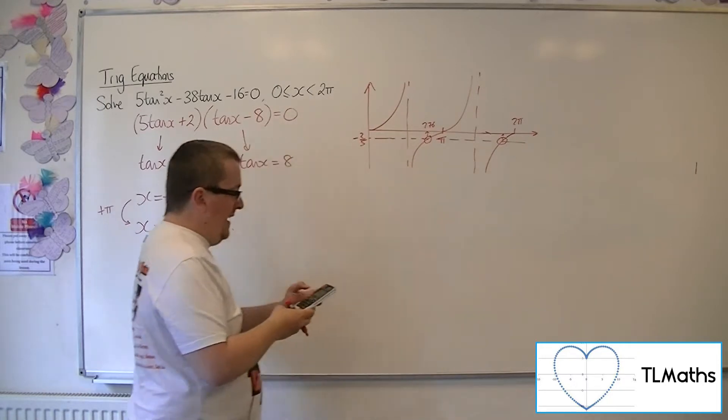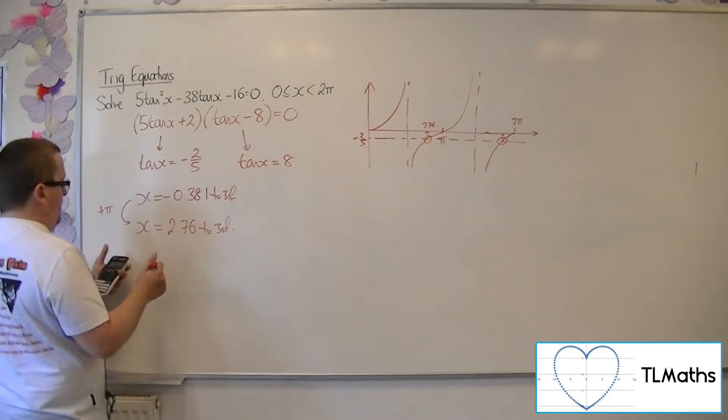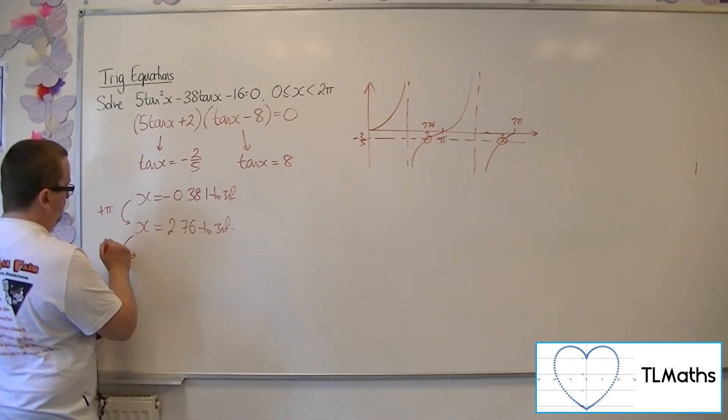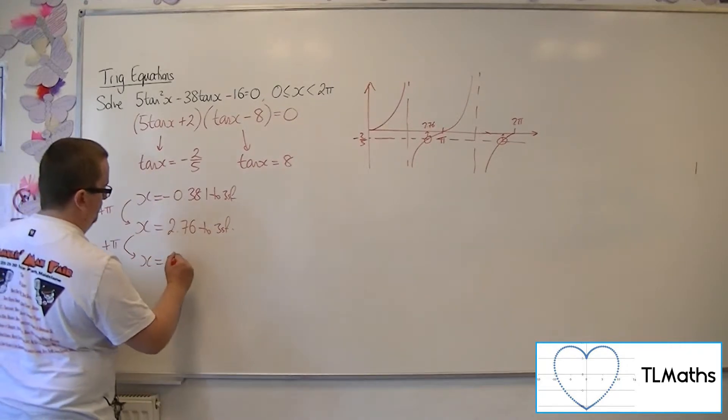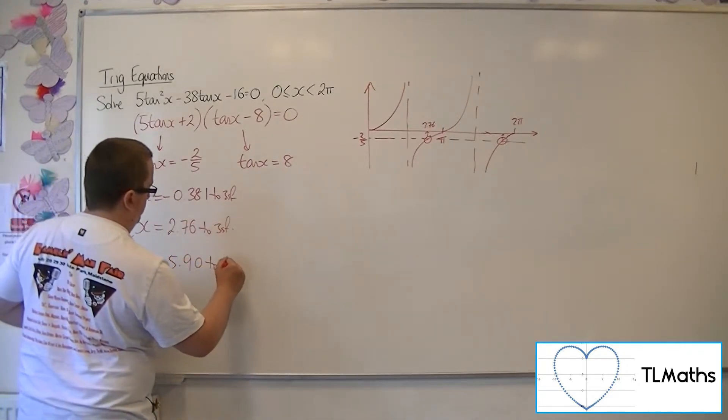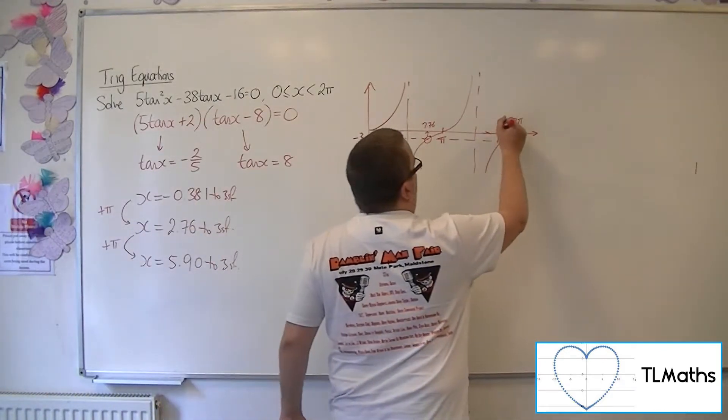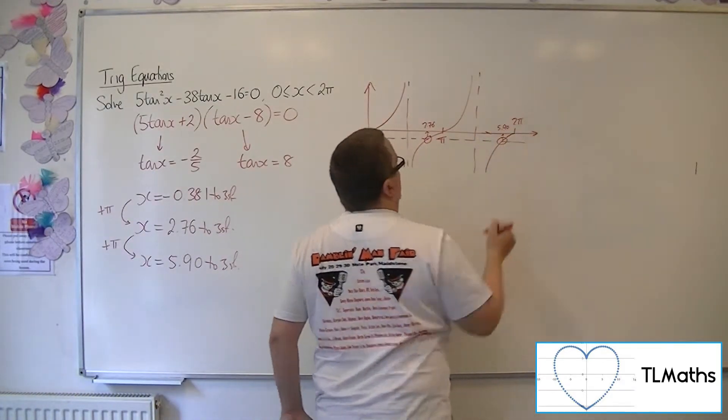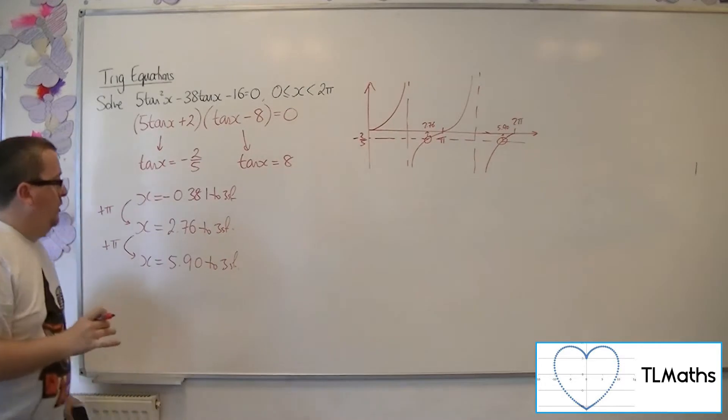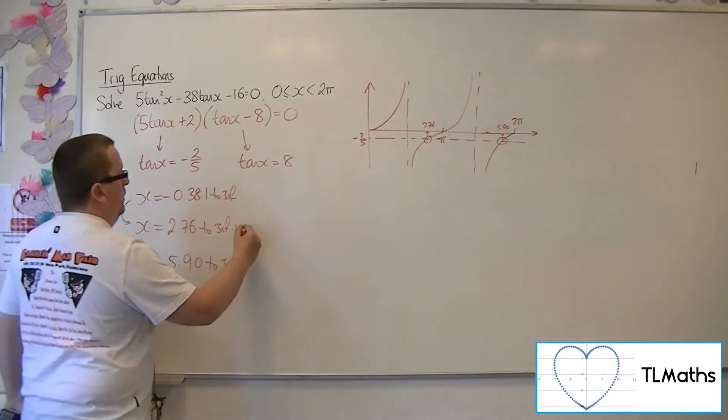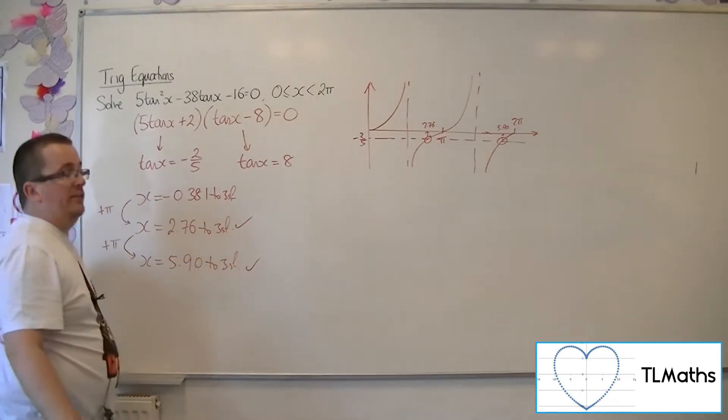And then if I add pi again, I get 5.90. So that's the second solution over here. So they are the two solutions to tan x equals minus 2 fifths.